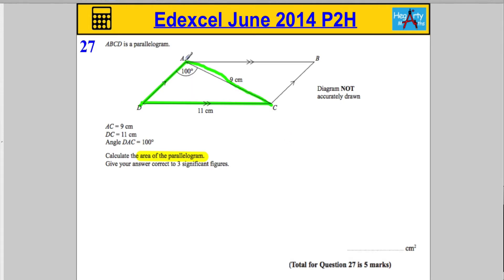Now, in order to get the area of this, I'm going to need two sides and the angle trapped in between. So let's go and try and work out this angle here.